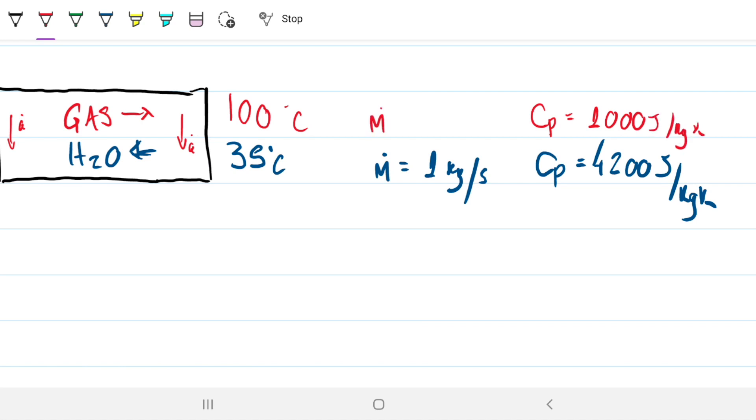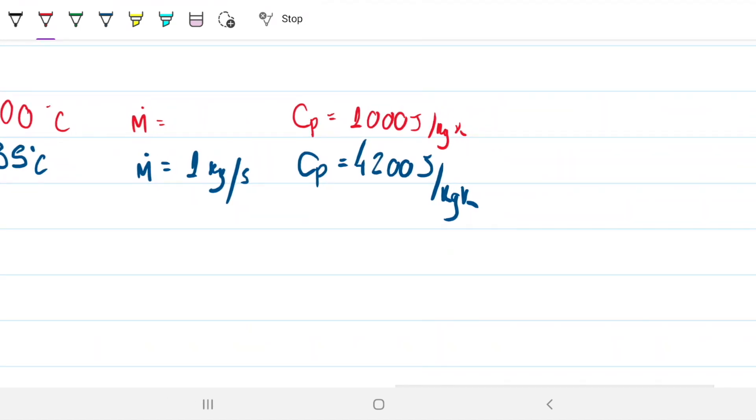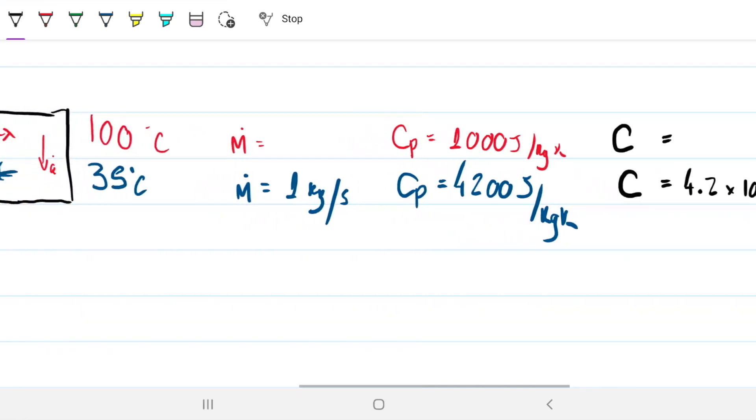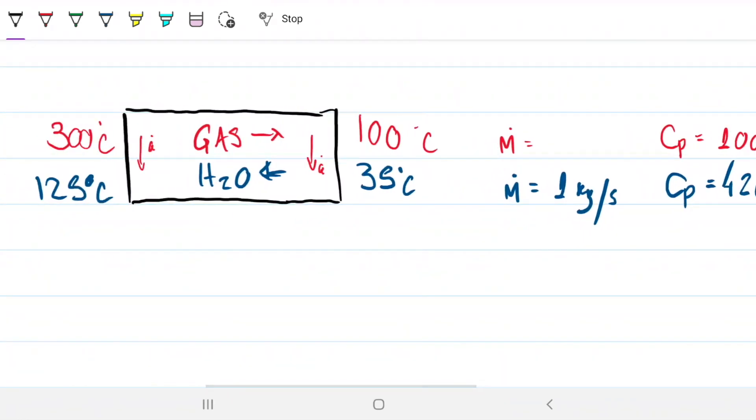But we don't know the mass flow rate, right? So when we go over here to calculate the capacity rates, the capacity rates for them, the capacity rate, the big C capital C for water, that's straightforward. That would be just 1,000 times 4,200, so we can do 4.2 times 10 to the third. That'll be watts per Kelvin. But then when we get to do this one, we're missing the mass flow rate to multiply there. So we need to find that mass flow rate first to be able to find the capacity rate.